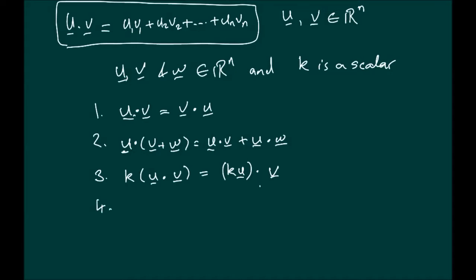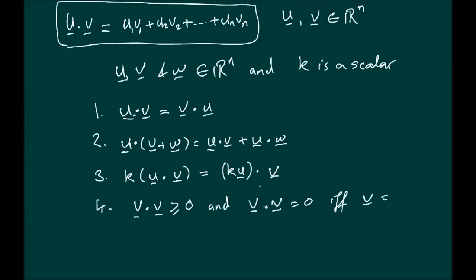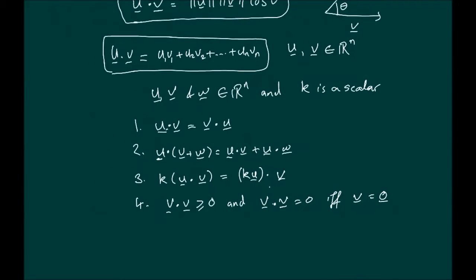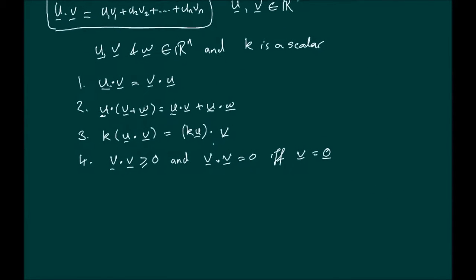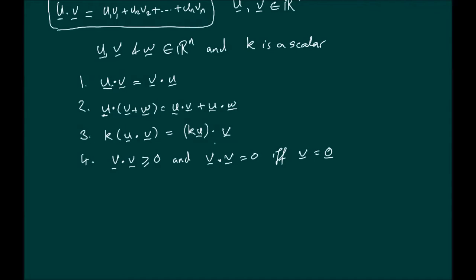The last property: v dot v — the inner product of v with itself — is always greater than or equal to 0. And if v dot v equals 0, it is the case if and only if v is in fact the zero vector. These are some important properties of the dot product that you should be familiar with.